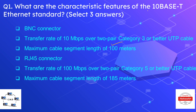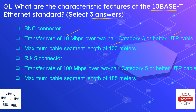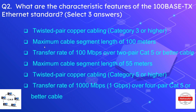Question number one: what are the characteristic features of the 10BaseT Ethernet standard? Select three answers. The correct options are: a transfer rate of 10 megabits per second over two pairs of Category 3 or better UTP cable, a maximum cable segment length of 100 meters, and the use of an RJ45 connector.